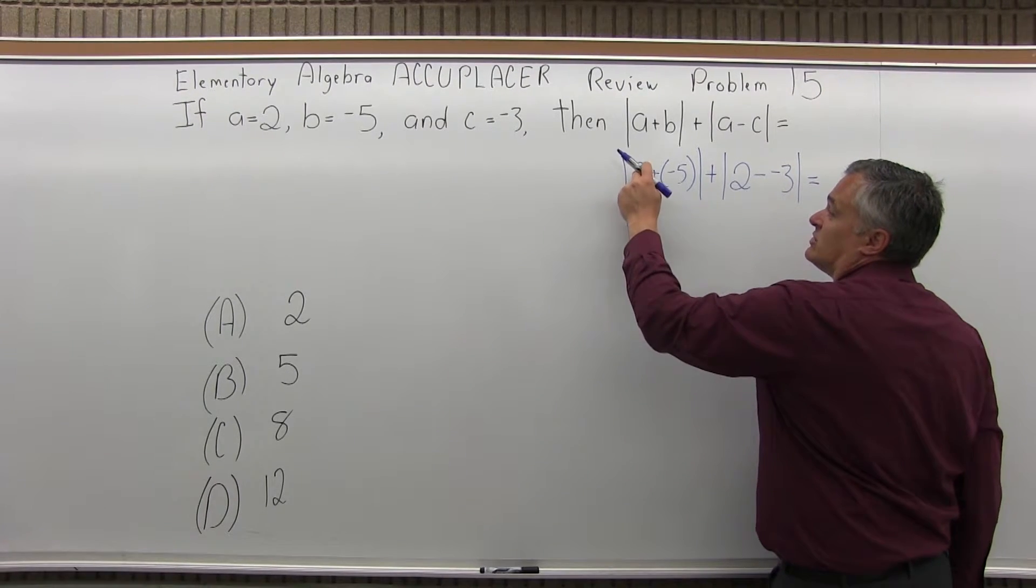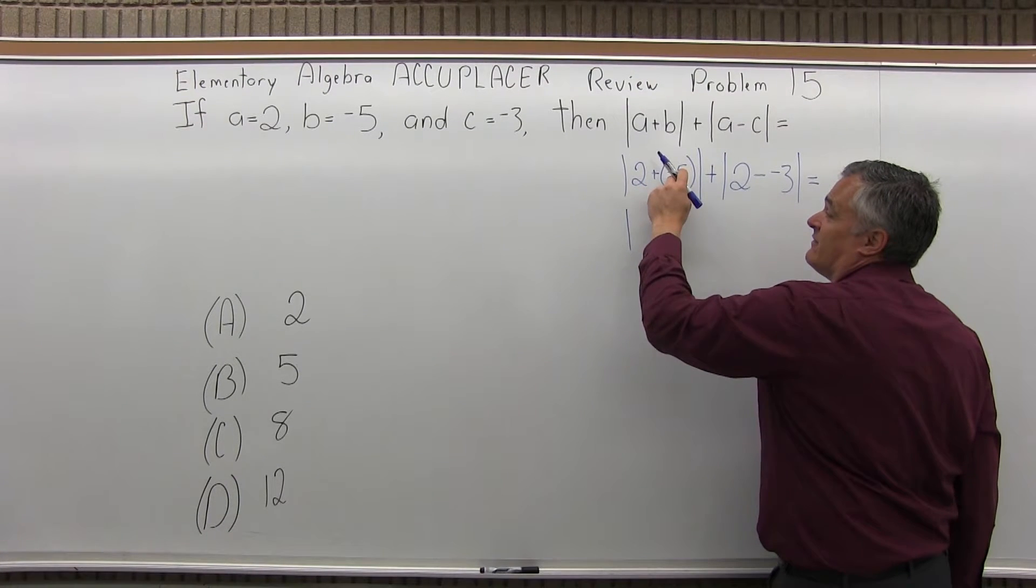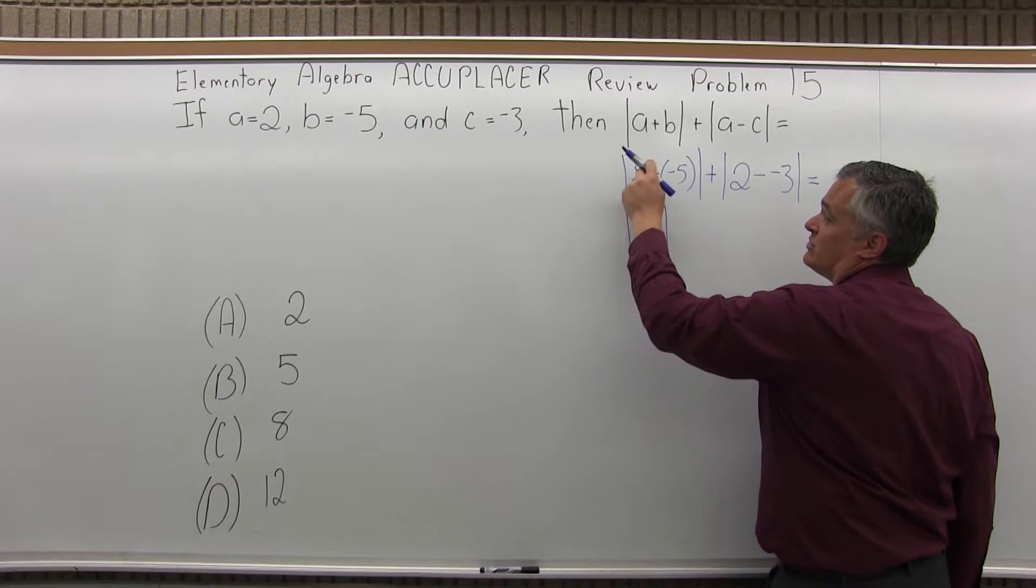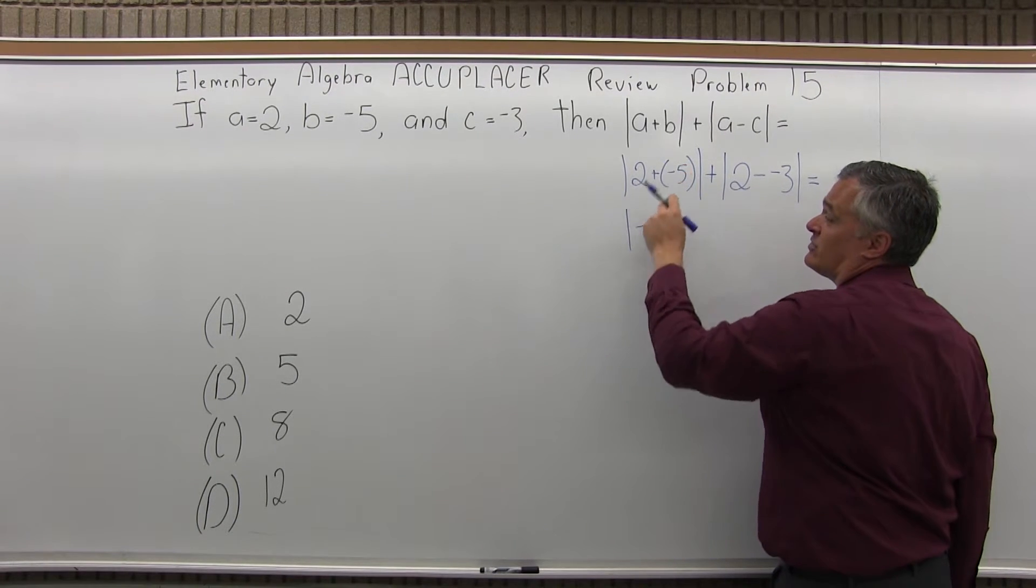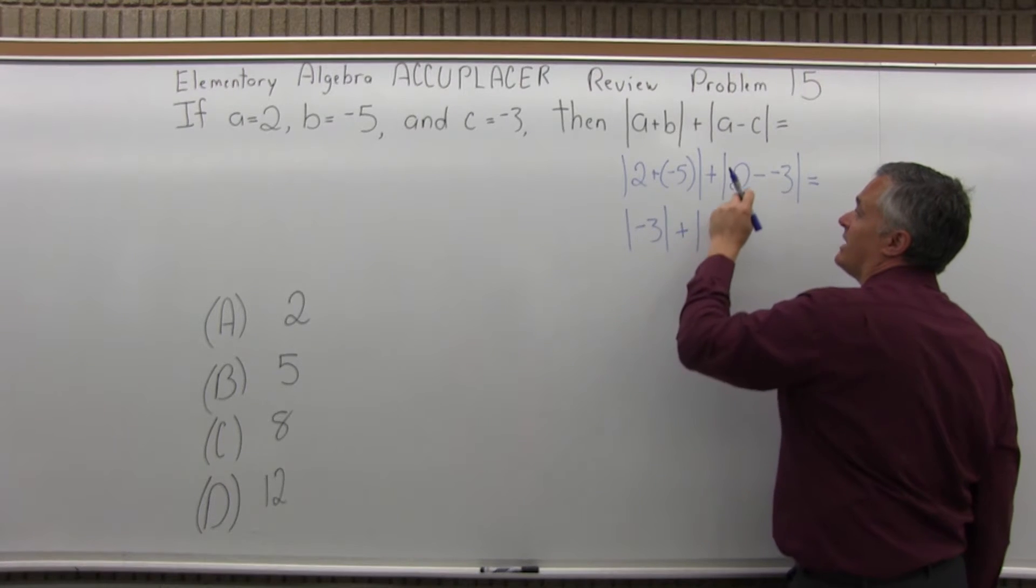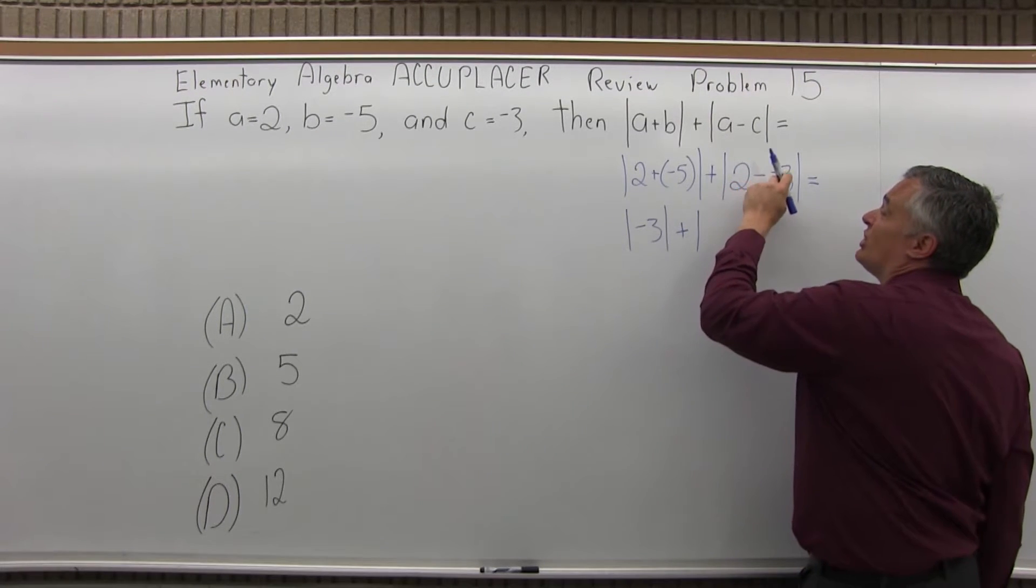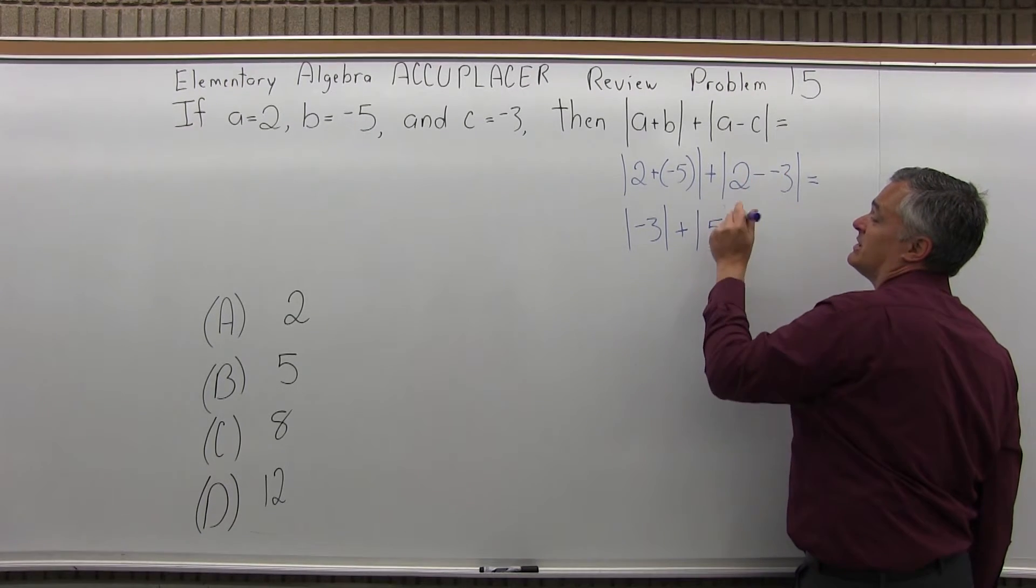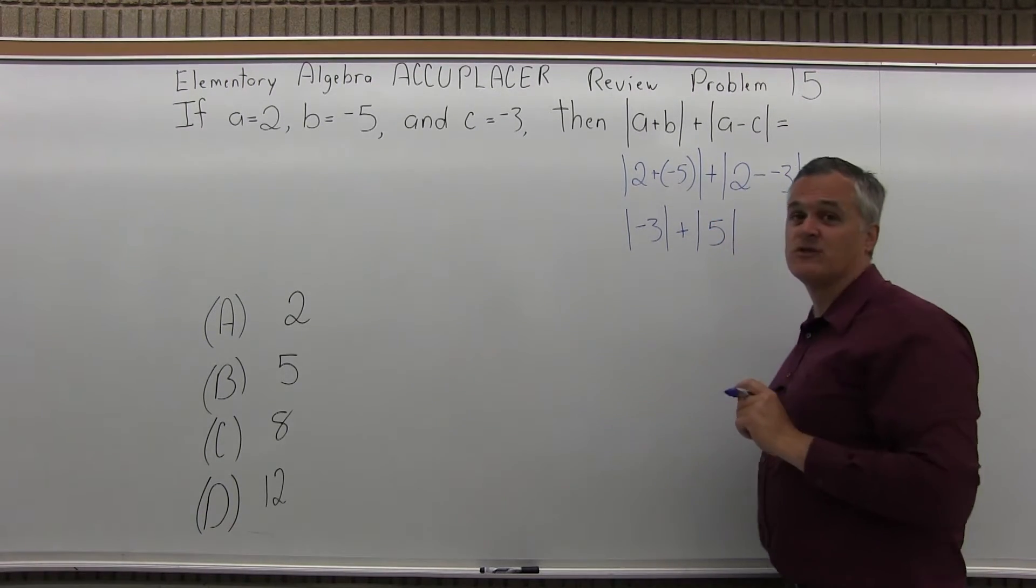So now the first set of absolute values, 2 plus a negative 5 is negative 3. Right? If it's 2 degrees out and it goes down by 5 degrees, it's now 3 below 0. And I'm going to add that to the absolute value of 2 plus 3. That minus and minus, 2 minus and minus 3 becomes 2 plus 3, which is 5.